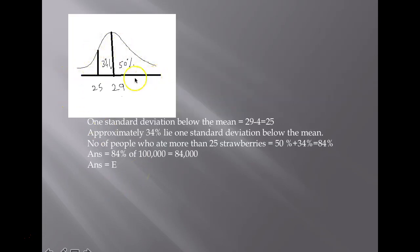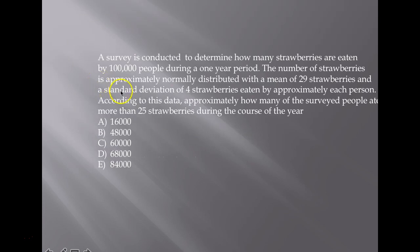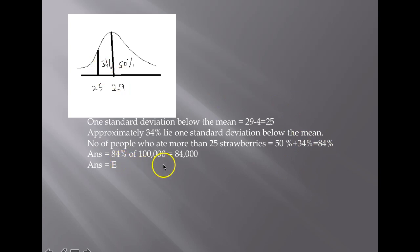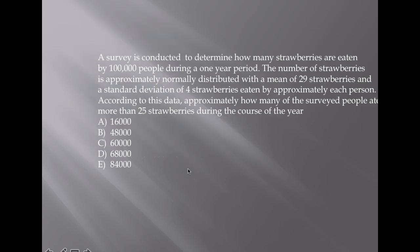Coming to the bell-shaped curve, the mean is 29 and the standard deviation is 4. One standard deviation below the mean is 29 minus 4, which is 25. We need to find how many people ate more than 25 strawberries. One side of the mean accounts for 50%, and 34% covers one standard deviation below the mean. So people who ate more than 25 strawberries: 50% plus 34% equals 84%, which is 84,000 out of 100,000. The answer is E.